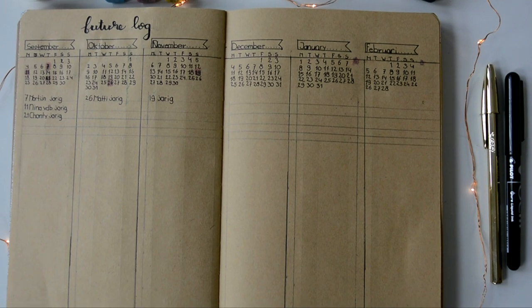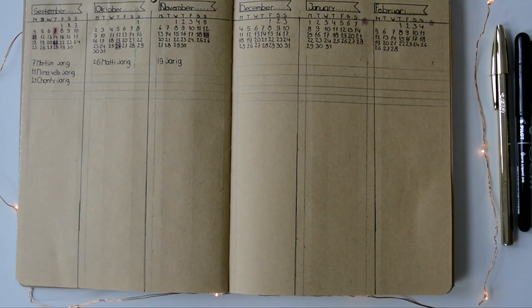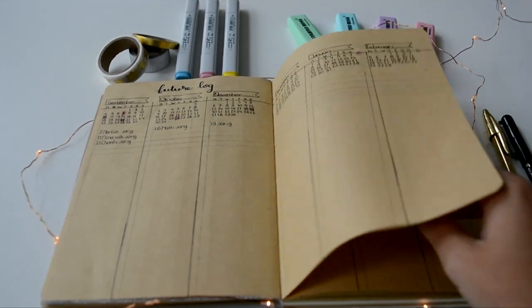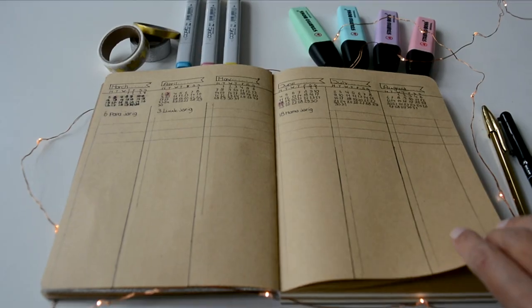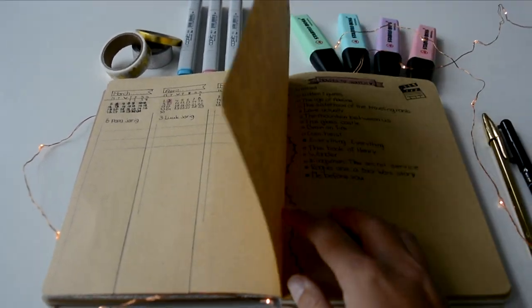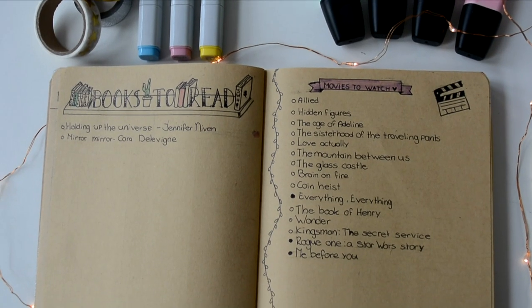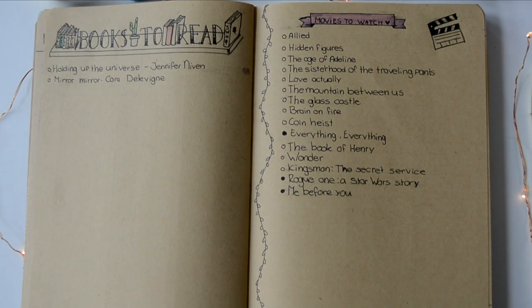Then you see my future log, and this is basically an overview of the whole year where you can write down special events or birthdays. Then I wrote down a list of books I want to read this year and movies I want to watch.